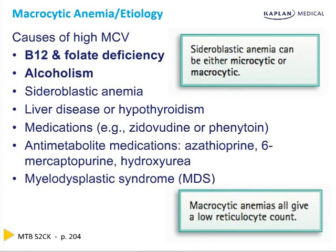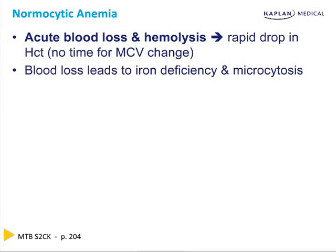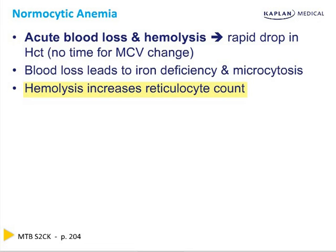Macrocytic anemias all have a low reticulocyte count because they're all a decrease in production. Normocytic anemias are two major things: acute blood loss and hemolysis. These are both a rapid drop in hematocrit, and there's no time for MCV changes — you need days or weeks for MCV changes to happen. Acute blood loss is normocytic.